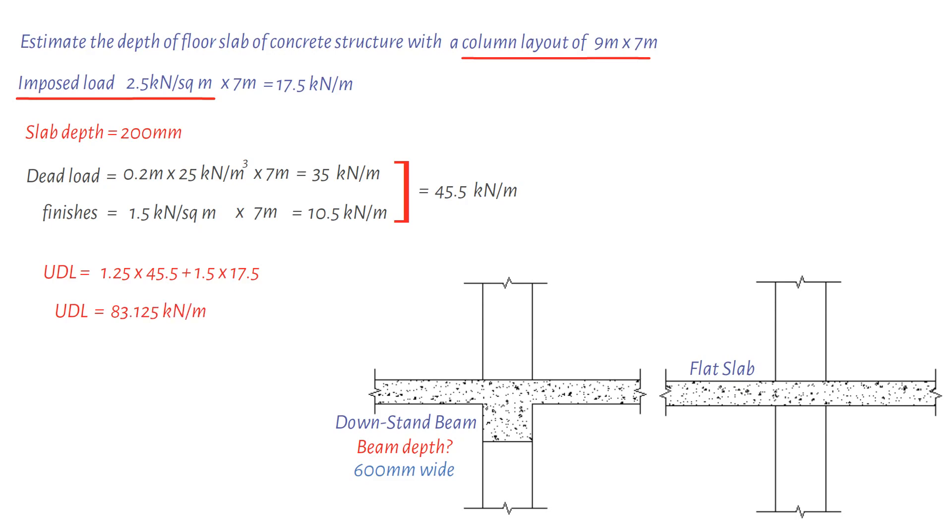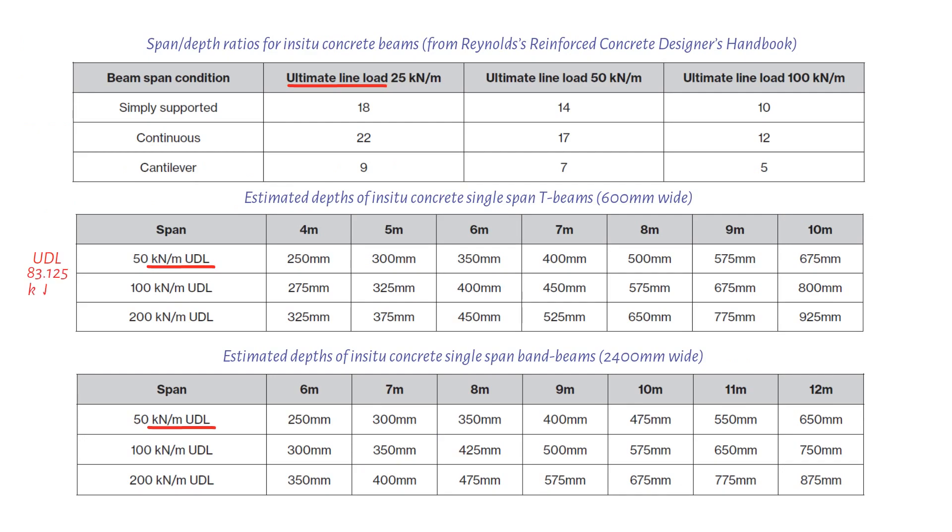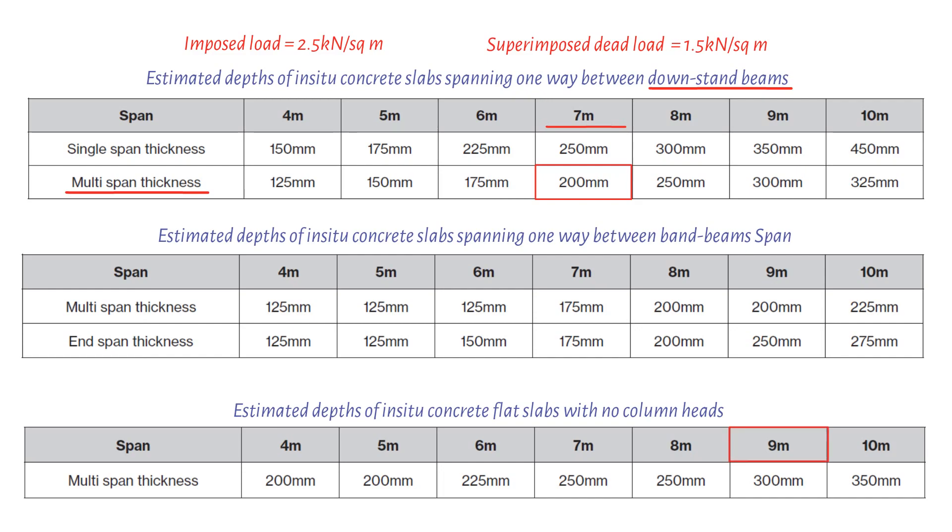Consequently, the beam depth is 645 millimeters for 9 meters span. For a flat slab solution, the longest span equals 9 meters, therefore the flat slab thickness equals 300 millimeters.